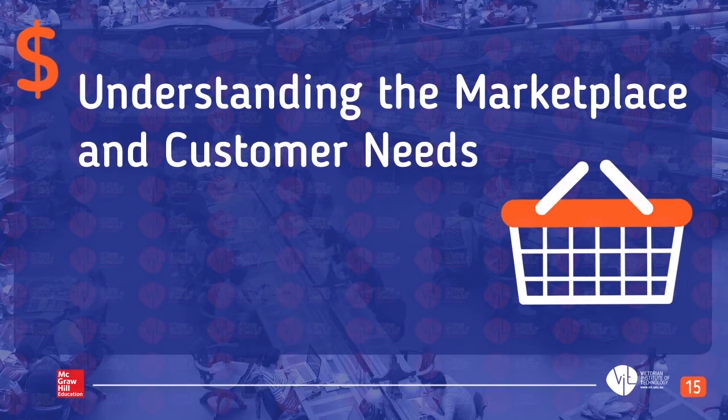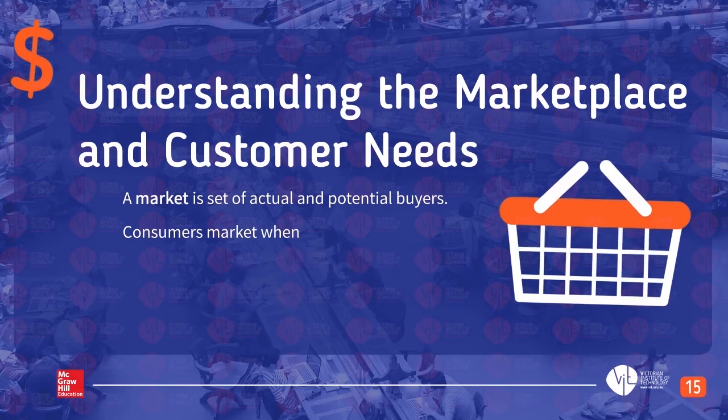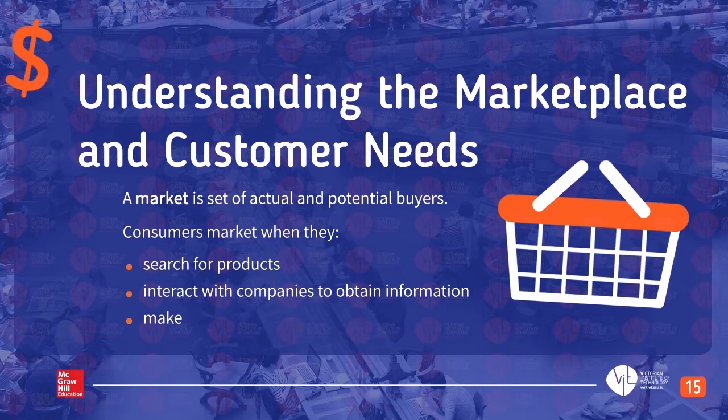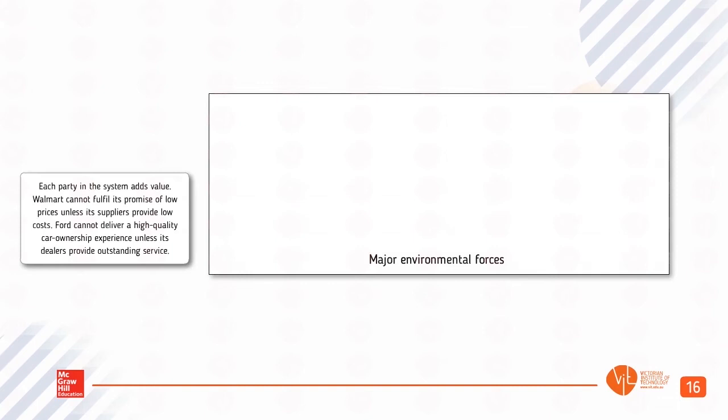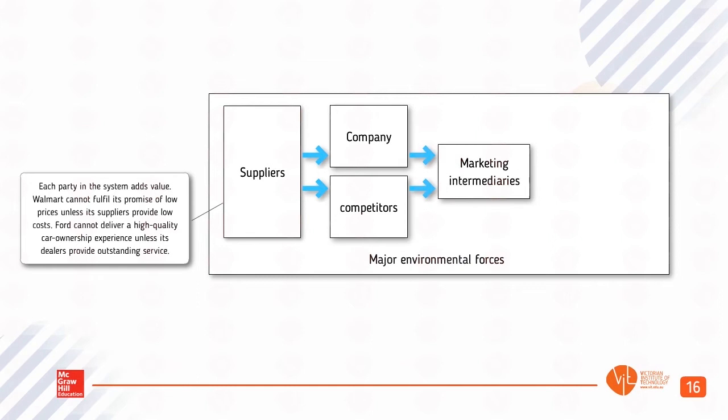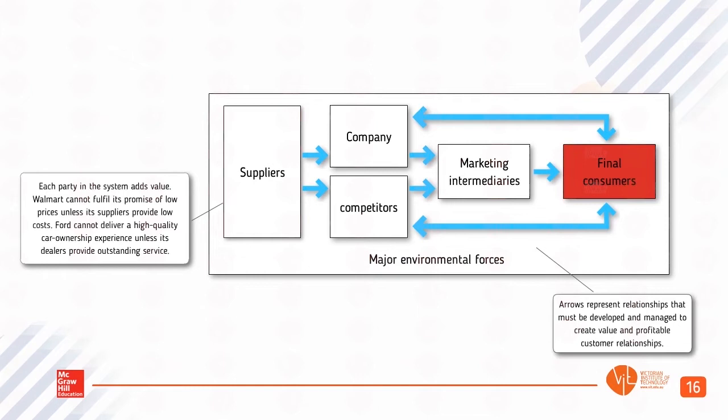A market is the set of actual and potential buyers. Consumers market when they search for products, interact with companies to obtain information, and make purchases. Each party in the system adds value — Walmart cannot fulfill its promise of low prices unless its suppliers provide low costs; Ford cannot deliver a high quality car ownership experience unless its dealers provide outstanding service. Major environmental forces include Suppliers, Company, Competitors, Marketing Intermediaries, and Final Consumers. Arrows represent relationships that must be developed and managed to create value and profitable customer relationships.